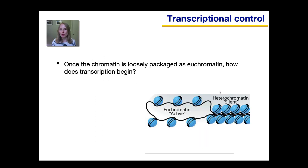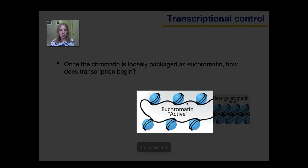So the question before us is: once chromatin is loosely packaged as euchromatin, shown here, and once a particular gene — such as this segment here — is found between nucleosomes and accessible for transcription, what kind of cellular machinery is needed to actually activate the transcription of this gene?